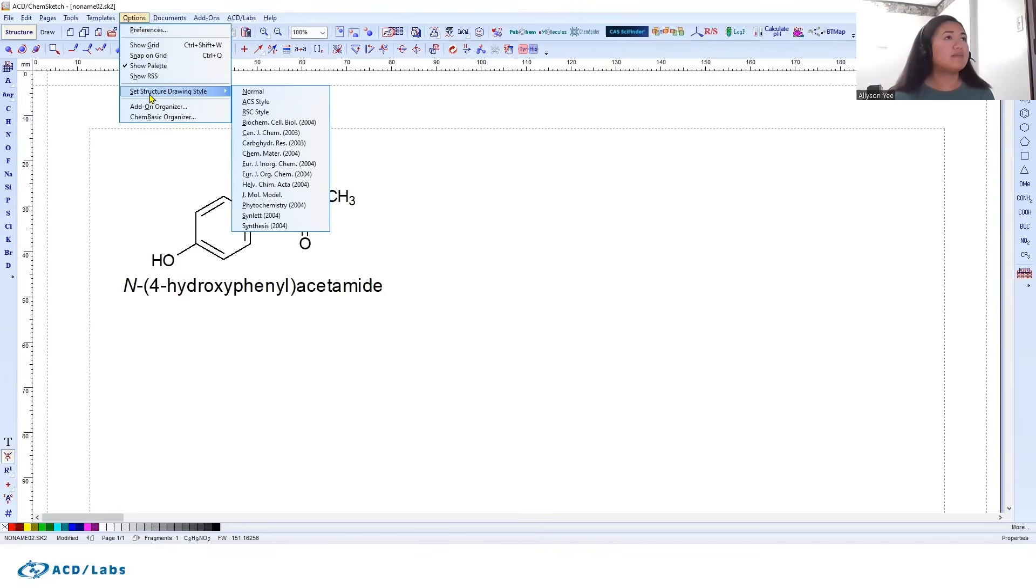the toolbar, we have the ability to set the structure drawing style. You see right now we're in normal, but we have the ability to change the drawing style for all of these different journals: ACS style, Biochem Cell Biology, Carbohydrate, Photochemistry, Synthesis. If you plan on publishing to these journals, you can simply click any of these templates and you'll start drawing in this specific style.